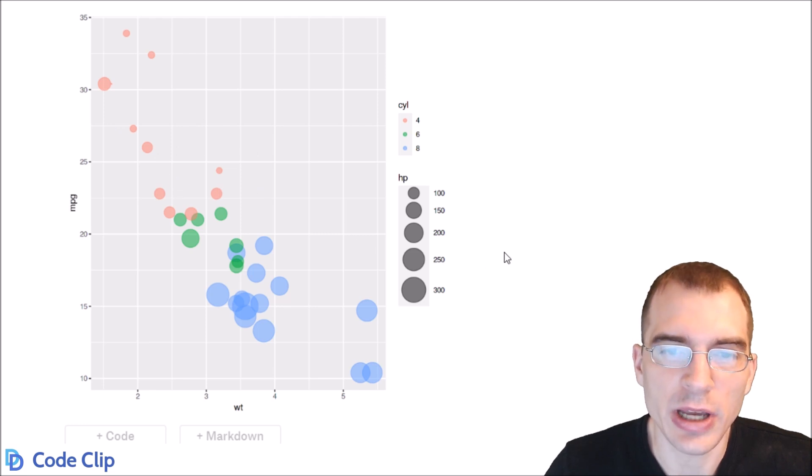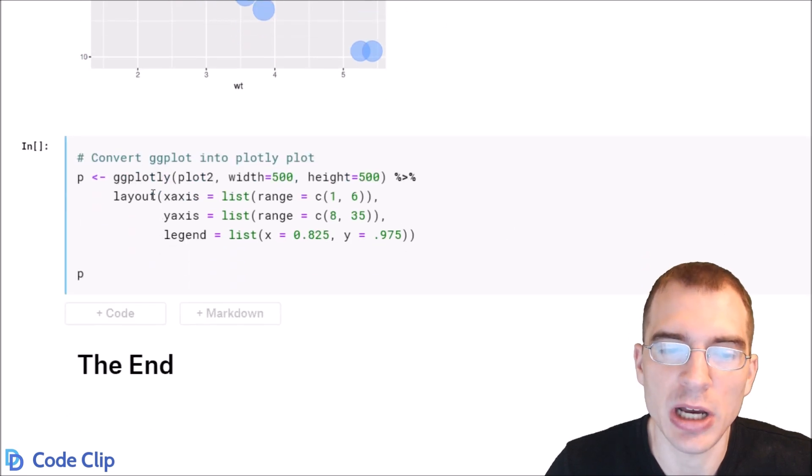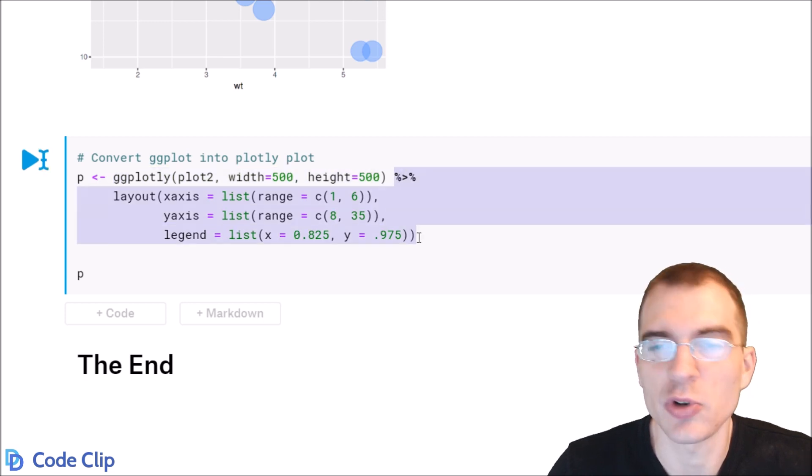You can do that by wrapping an existing ggplot in this ggplotly function that comes with the plotly package, so we're passing plot2, which is the plot we just made above, to ggplotly. We're setting a specified width and height and then we're just going to add a little bit of extra formatting so that the plotly plot looks a little bit better.